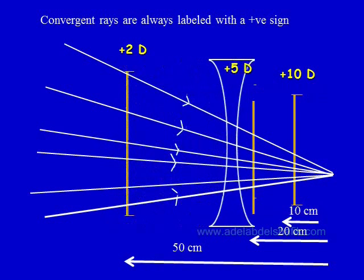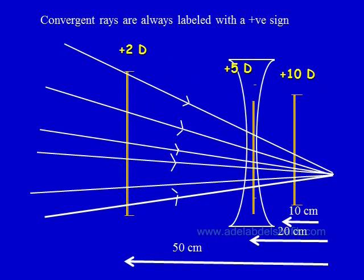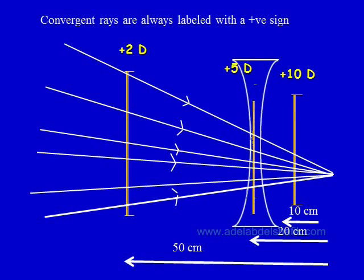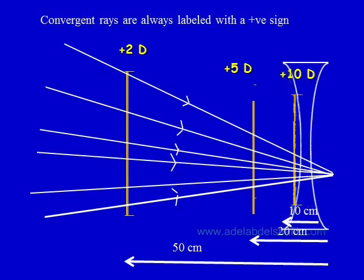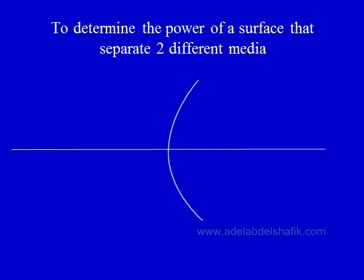Similarly, at 20 centimeters you need to put a minus lens with a focal length of 10 centimeters — that is, a minus 10 lens — which means that at this location the convergence is plus 10.